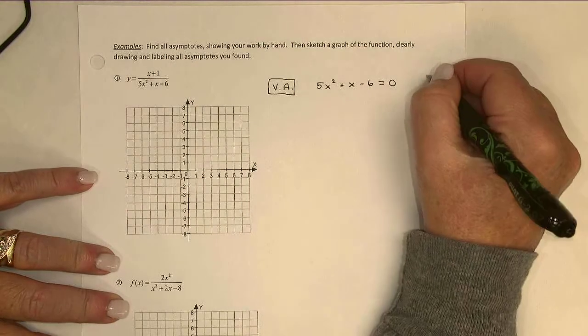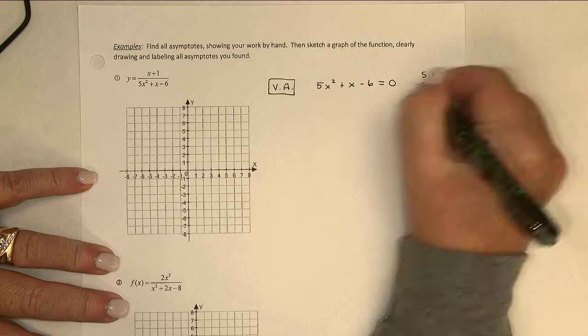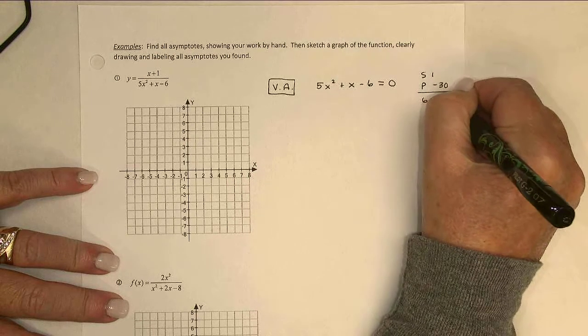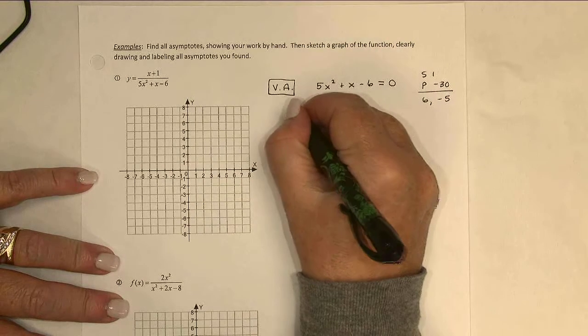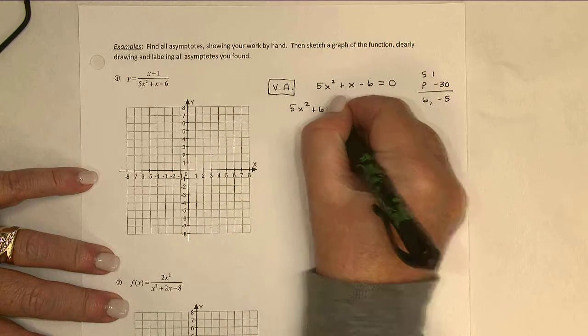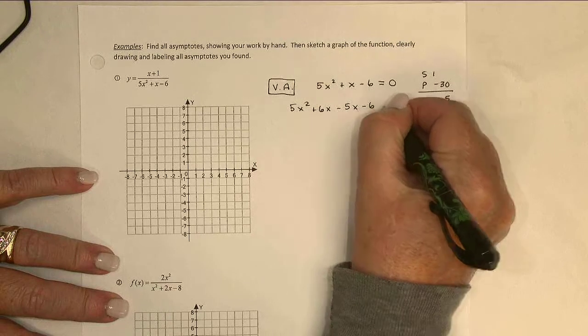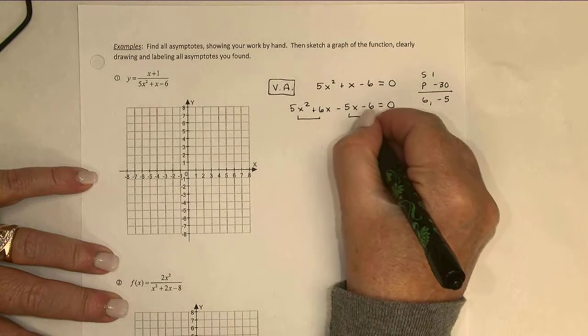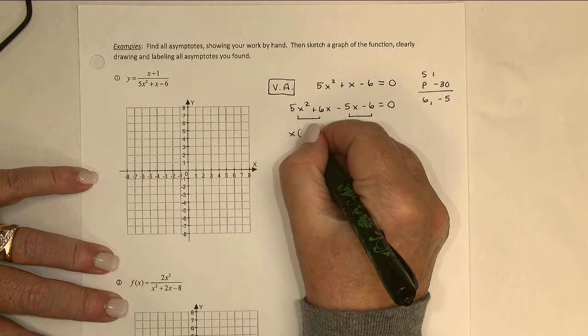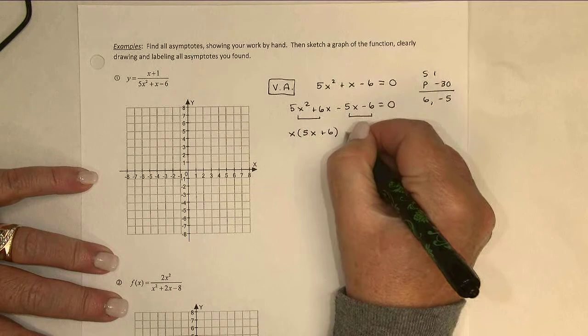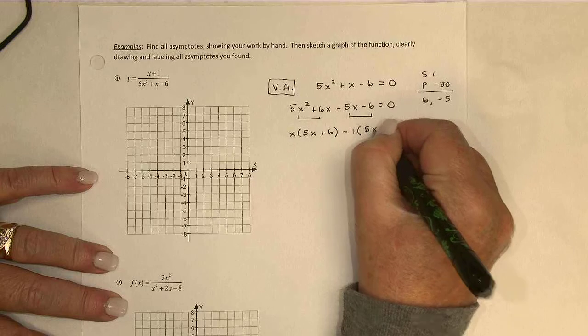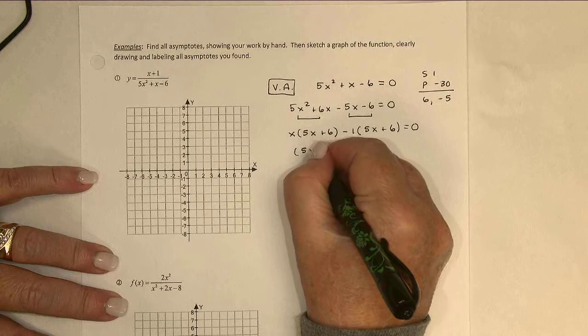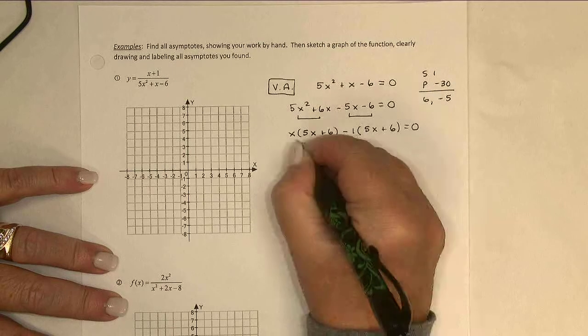All right, let's see. I want to factor this, and I think I can. We're looking at a sum of one, product would be negative 30. So positive 6, negative 5. Break up that middle term, and then factor by grouping. I'm going to factor out an x, makes that 5x plus 6, and also a negative 1, which also makes it 5x plus 6. And I factor out the common binomial, 5x plus 6, giving me x minus 1.